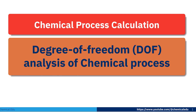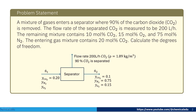Today I'll talk about degree of freedom analysis of a chemical process. Here is the problem statement: a mixture of gases enters a separator where 90 percent of carbon dioxide is removed. The flow rate of separated carbon dioxide is measured to be 200 liters per hour. The remaining mixture contains 10 mole percent CO₂, 15 mole percent oxygen, and 75 mole percent nitrogen. The entering gas mixture contains 20 mole percent carbon dioxide. Calculate the degree of freedom.